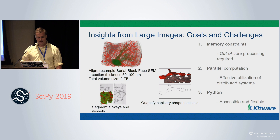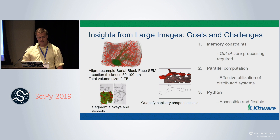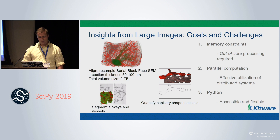We'd like to do some computing and analysis on the data so we can learn things from it. We want to segment where the airways and vessels are from these slices of data, and eventually quantify statistics like shape and size from the vessels so we can gain biological knowledge from our imaging data. But we have practical challenges — this dataset in total for the entire volume is two terabytes.